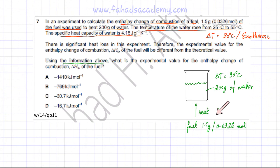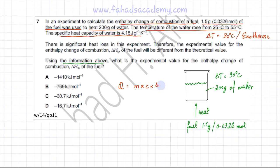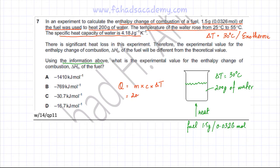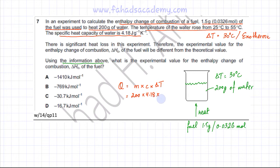The amount of energy absorbed by the water can be calculated using the formula: heat energy Q = mass × specific heat capacity × delta T, i.e., MC delta T. The mass of water is 200 grams, the specific heat capacity is 4.18 joules per gram per Kelvin, and the temperature change delta T is 30 degrees centigrade.